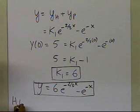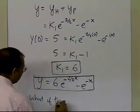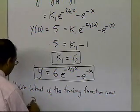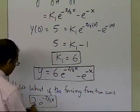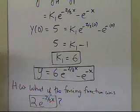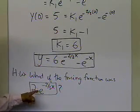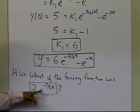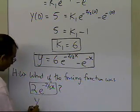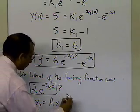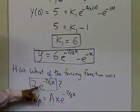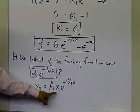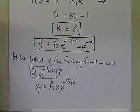As part of your homework, what if the forcing function on the right-hand side was 2 times e to the power minus two-thirds x? You'll notice this forcing function is the same as the homogeneous solution. When that happens, you must choose the next independent solution for the particular part. The particular part will look like ax times e to the power minus two-thirds x, because choosing the form of the right-hand side itself would give you 0 equal to a non-zero number. So you choose the next independent solution, ax*e^(-2/3 x), to solve that problem.